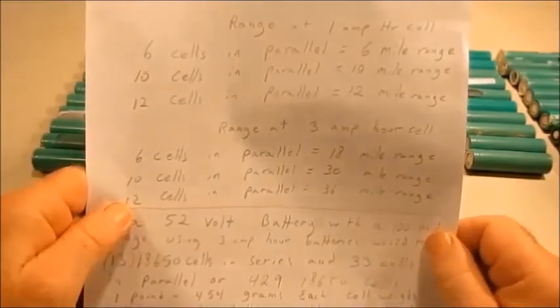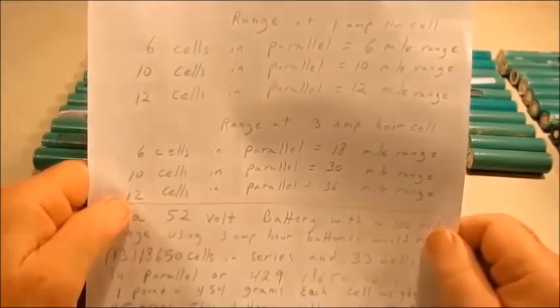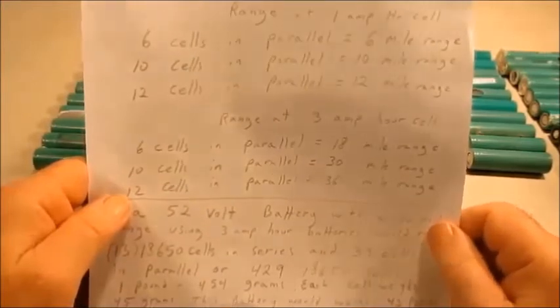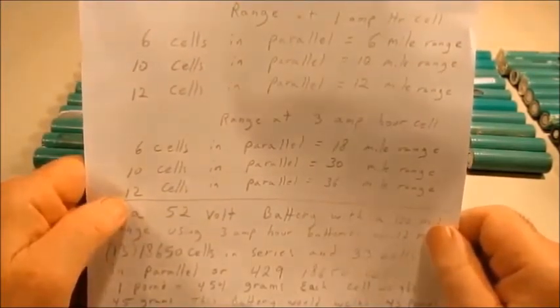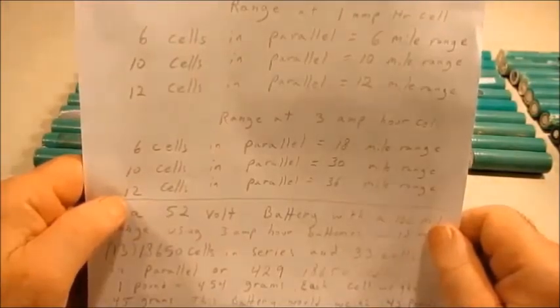About the maximum cell you can buy right now, and they're not really available for sale that easily, is a Panasonic 3.6 amp hour, and that costs you around twenty two to twenty five dollars per cell.